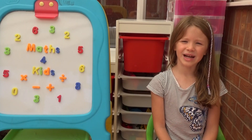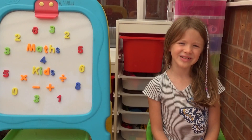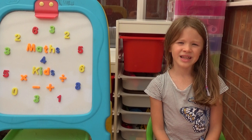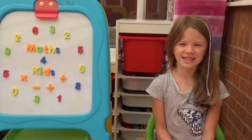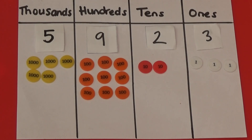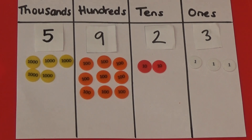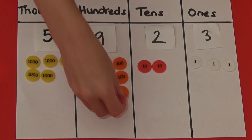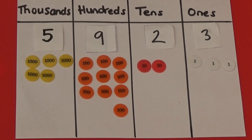This time we're going to look at why sometimes when we add 100 to a number, the thousands also change. My number here is 5,923. If I add 100 to the hundreds column, we now have 10 hundreds. We can't have 10 counters in the hundreds column, so I'm going to exchange my 10 hundreds for a 1,000 counter.